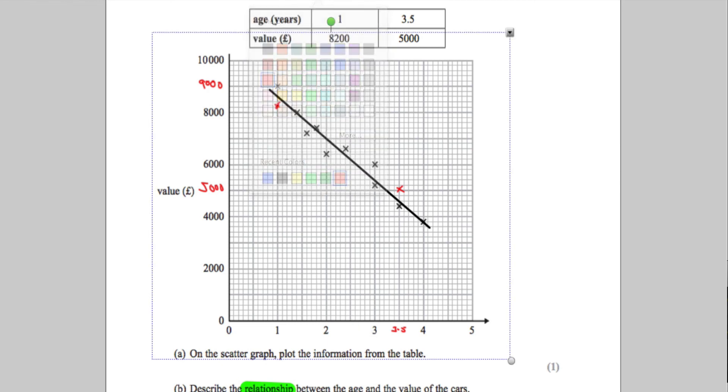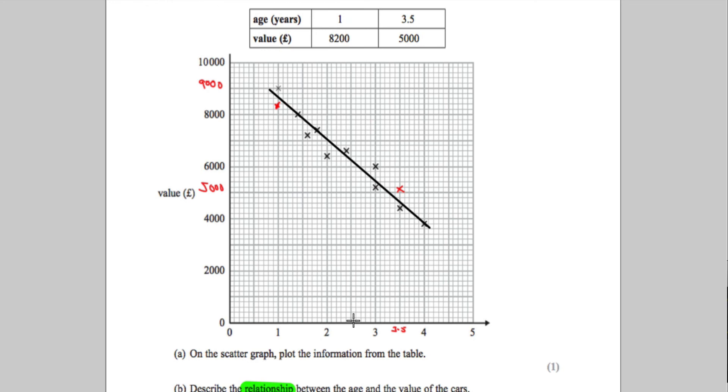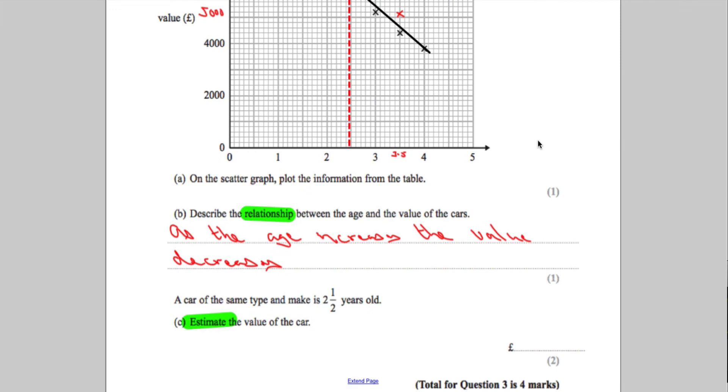So from 2.5 years, we go up and across. I make that to be 6,000, let's say 6,400 pounds. They will accept a range of answers here. So 6,400 pounds should be safely within the range required.